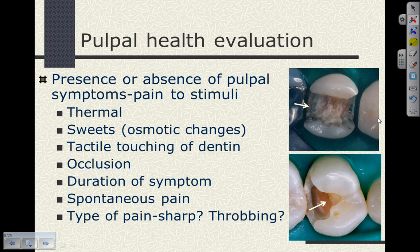We need to evaluate the pulpal health. In both clinical cases we've seen, the axial wall is very close to the pulp. We can't give a precise dimension from the x-ray alone. Before we start these preparations, when we know the preparation will end up being very close to the pulp, we're going to ask the patient questions and do a pulpal health evaluation — asking whether they've had presence or absence of pulpal symptoms, pain to different stimuli.